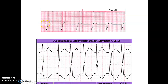My QRS goes up, comes back down, and it looks like it notches or changes directions right there — so that's at least three boxes, meaning 0.12 seconds wide. I also have secondary ST and T wave changes going in the opposite direction of my QRS. So this would be idioventricular, but because my rate is a normal rate of 60, I'm going to call it accelerated idioventricular.